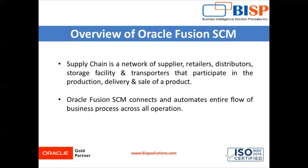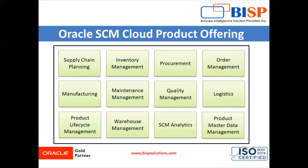Storage facilities are also connected with transporters. Oracle Fusion Supply Chain Management connects and automates the entire flow of business processes across all operations. This means the production department is connected with the delivery department, the delivery department is connected with the sales department — all departments are interconnected to each other.